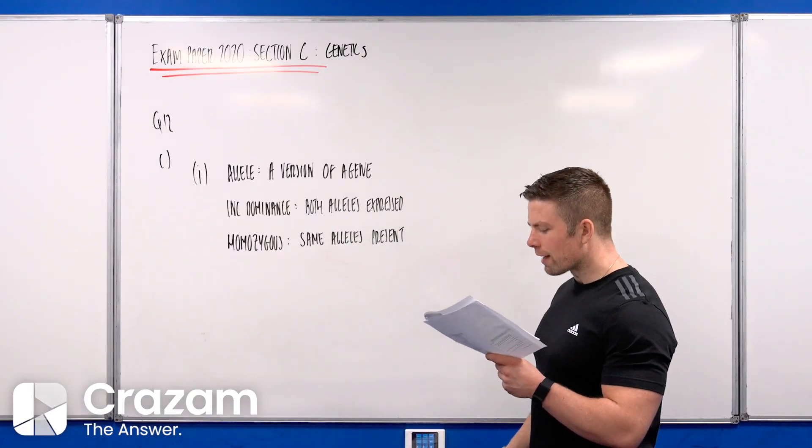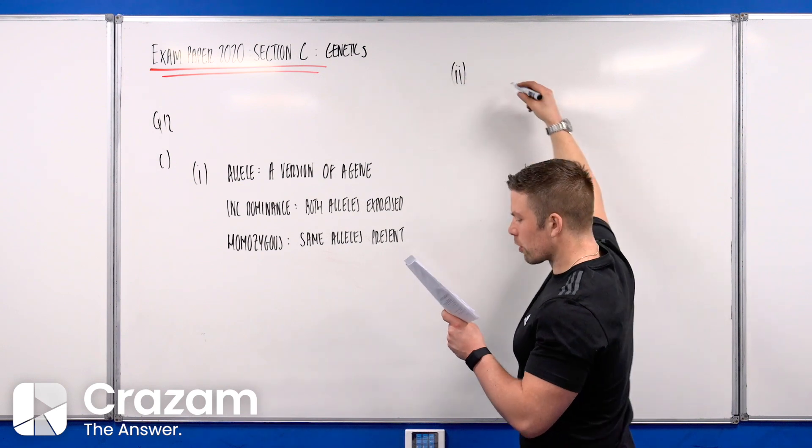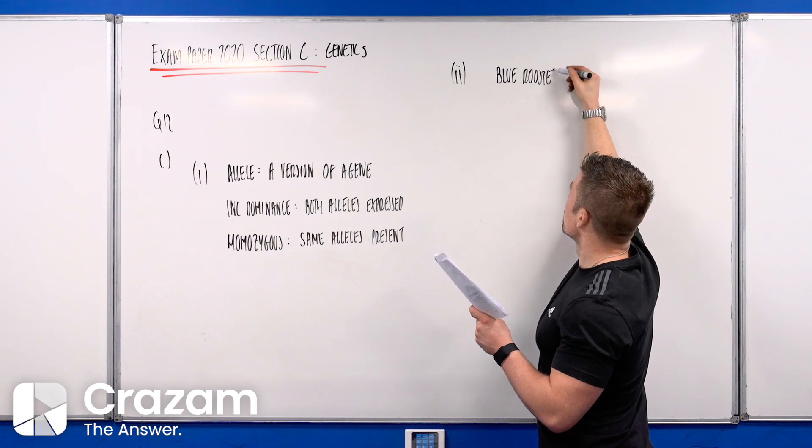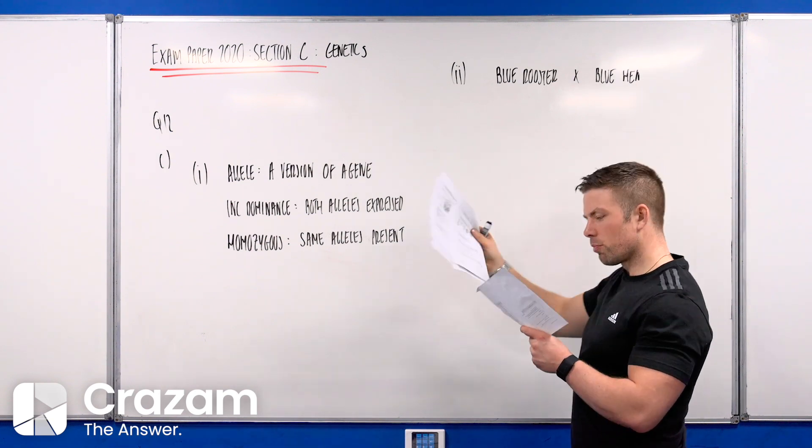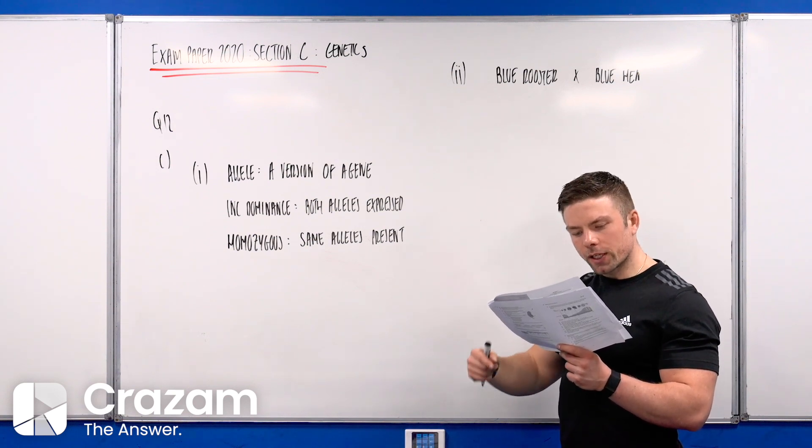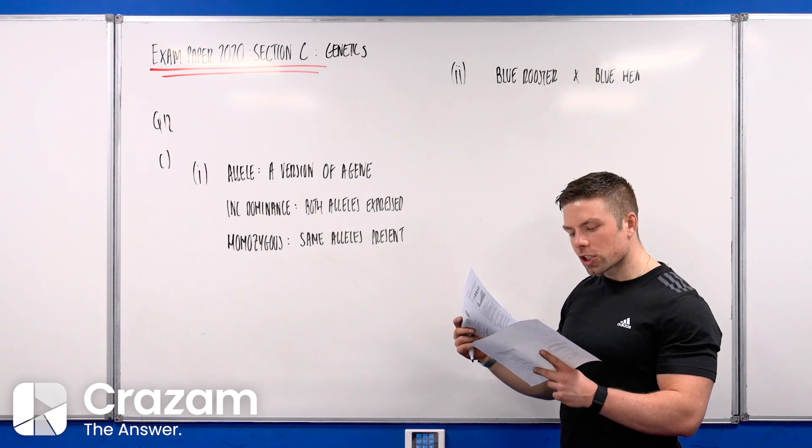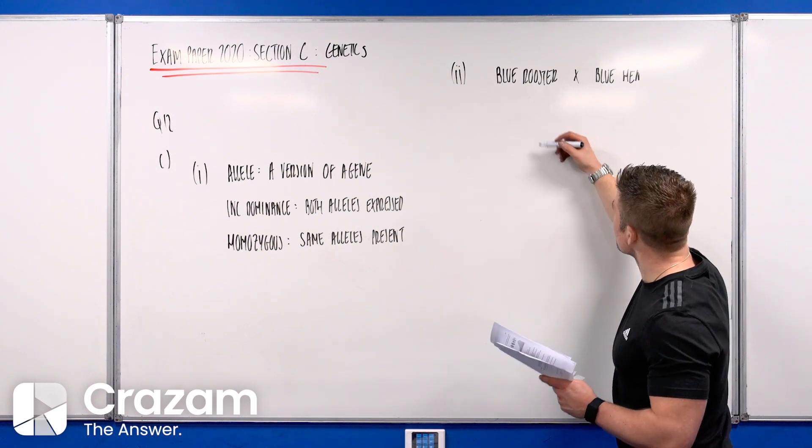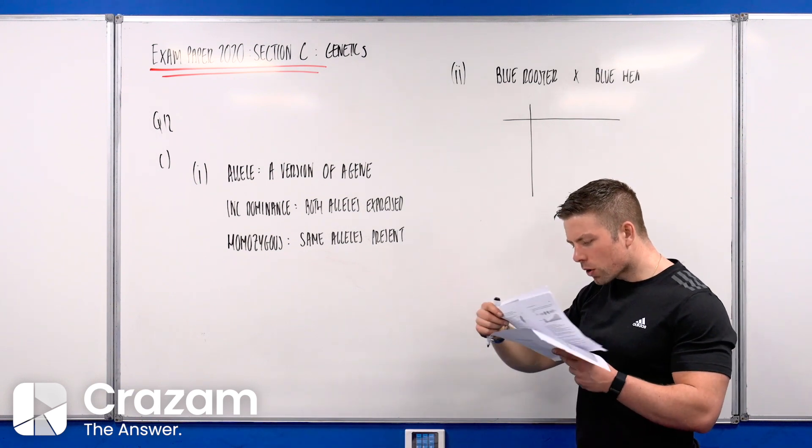They haven't asked if they are male or female, so you don't have to put any of that in. I use a Punnett square here. If you go back to the question, it says speckled color capital lowercase is known as blue. So we have capital B lowercase b crossed with capital B lowercase b.